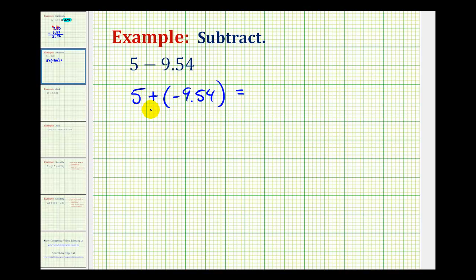But really we can see here that the negative is going to outweigh the positive, so this sum will be negative, and then to find that negative number, what we'll do is subtract the absolute values.